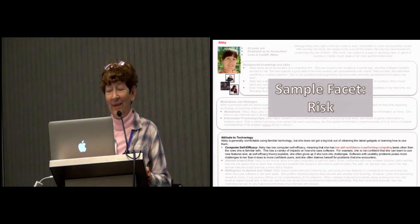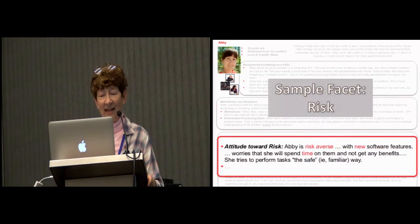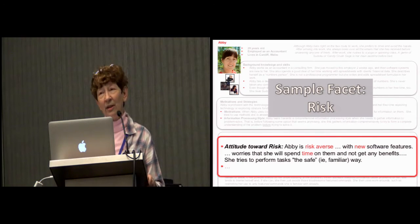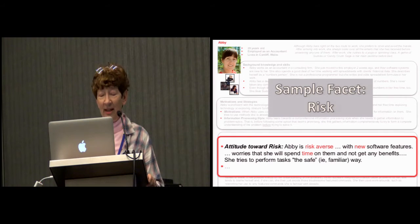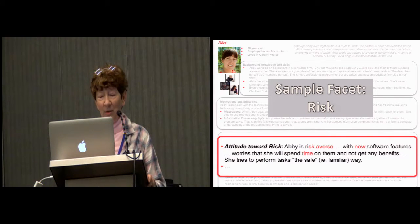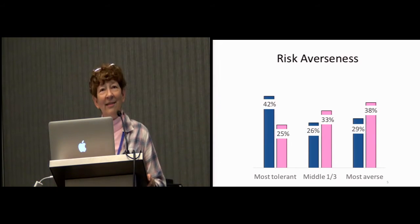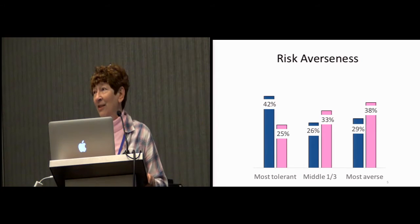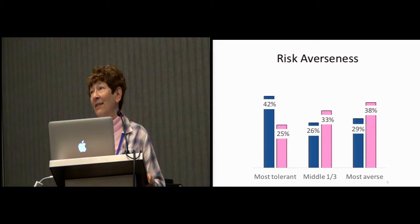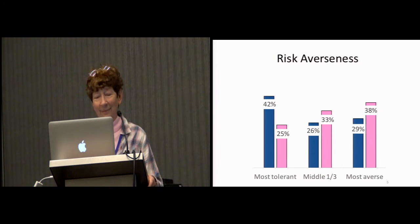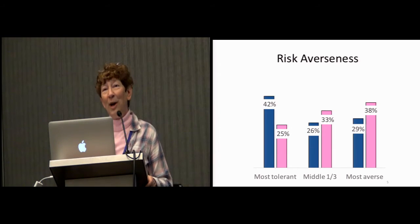Abby's job is to present a set of facet values. One of the facets is risk. Abby's version of risk is that she is risk-averse with new software features — risk-averse in that she's worried not because she's afraid something will go wrong, but because she's worried about wasting her time. Her time is very valuable, and she doesn't want to spend time and then not get any benefits from it. So whenever she has a task she can perform a more familiar way than using some fancy new feature, she will. These facet values are all backed by extensive empirical and theoretical work — we chose facets backed by at least five independent empirical studies.